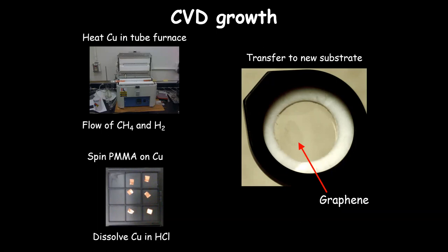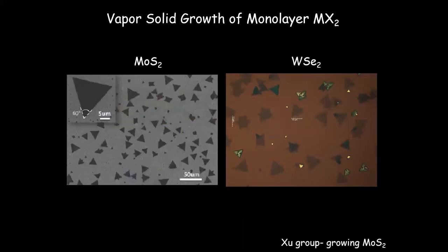Really, what my group is interested in is not just single materials by themselves, but making heterostructures and creating new electronic properties. We also have the ability to grow TMD materials — here's molybdenum sulfide, tungsten diselenide. We need the whole wide range of these materials so that we can combine them together to make new heterostructures.